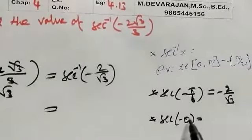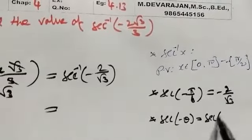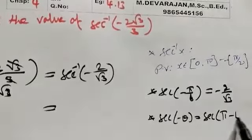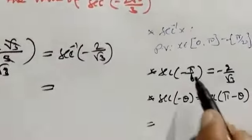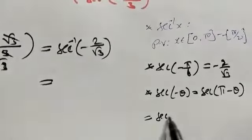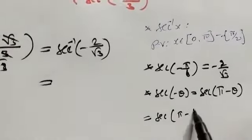Sec inverse of minus theta, by the rule, equals sec of 180 degrees minus theta. Next step: sec of minus 30 degrees becomes sec of 180 minus 30.